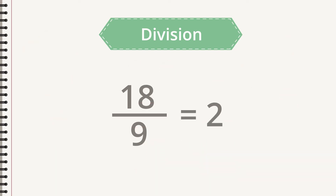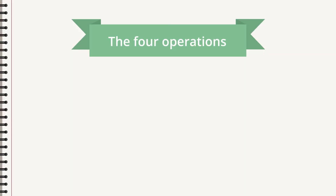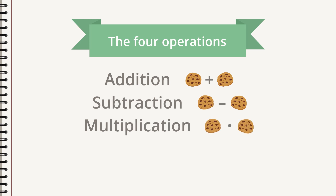Does division have any connection to the other operations? Yes, division is multiplication backwards. Eighteen divided by nine equals two, and two times nine is eighteen. Times and divided by are connected and are each other's opposite. Remember: addition is plus; subtraction is minus — addition backwards; multiplication is times — a repeated addition; and division is divided by — multiplication backwards.